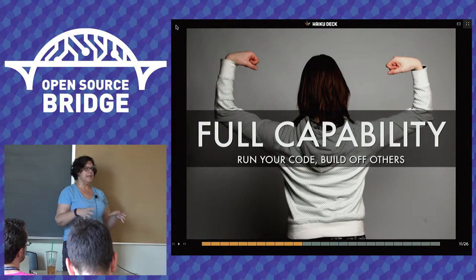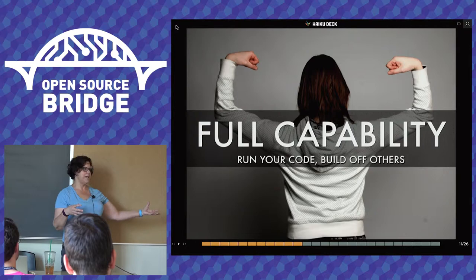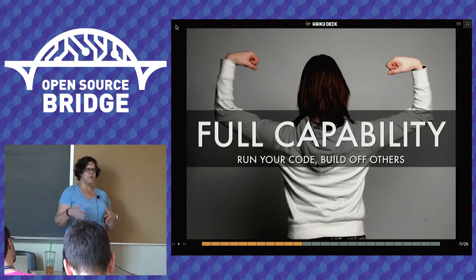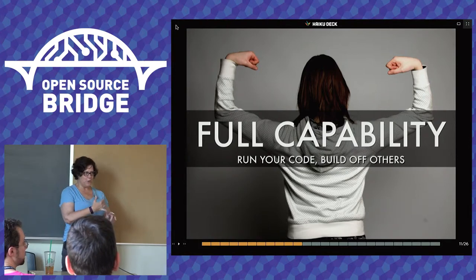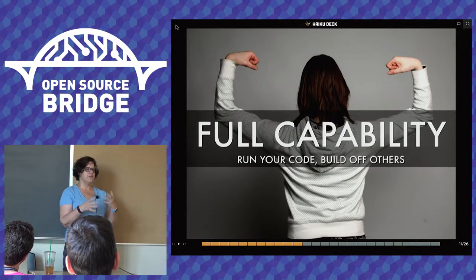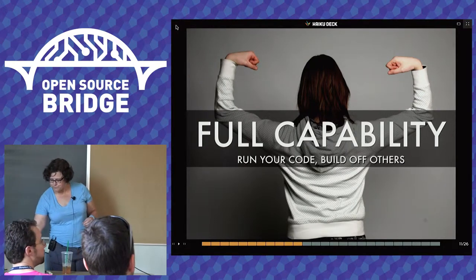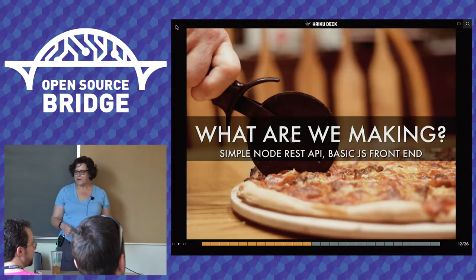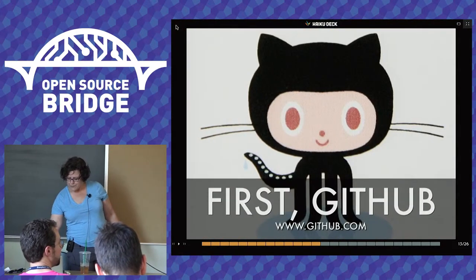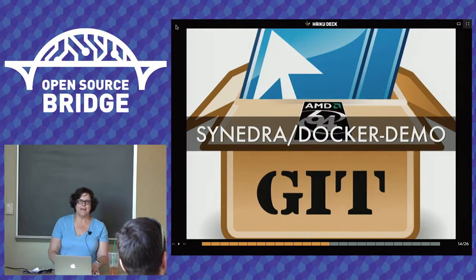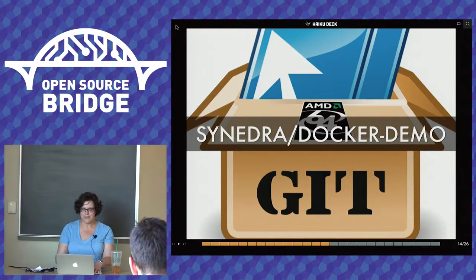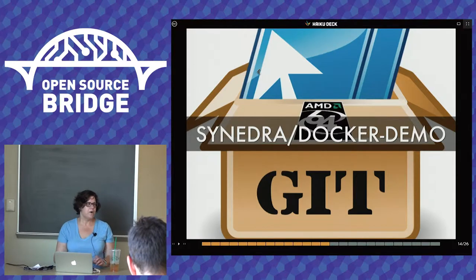Docker is even more powerful generally — it can share directories with your main system and expose ports so you can run a web service. For this talk's example I have a very tiny node.js server with a small index.html — it's simple but demonstrates how the container works. That's a simple node REST API with a basic JavaScript frontend.